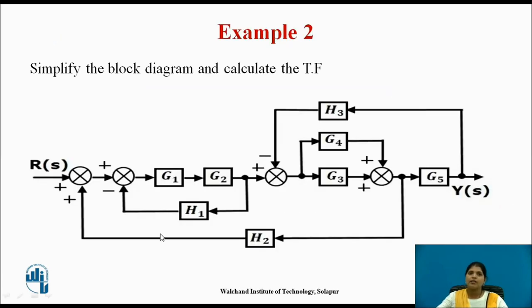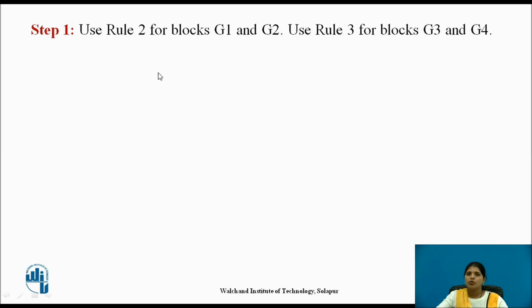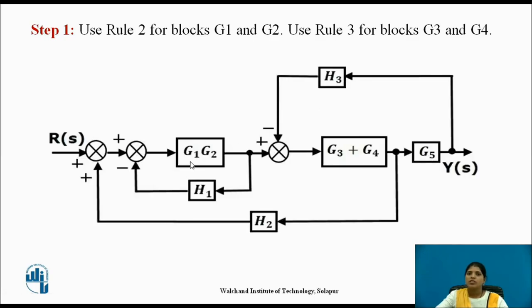Now consider the second example: simplify the block diagram and calculate the transfer function. Here R(S) is the input and Y(S) is the output. Step 1: use rule 2 for blocks G1 and G2, and rule 3 for blocks G3 and G4. G1 and G2 are in series so they get multiplied, and G3 and G4 are in parallel so they are added — G3 plus G4.